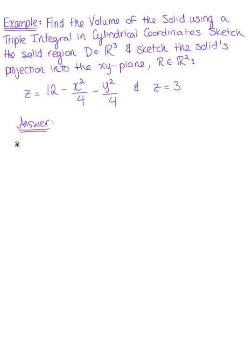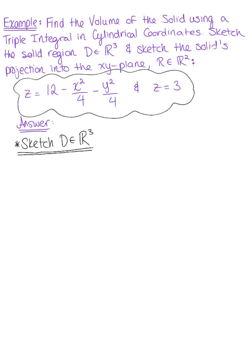The first thing we want to do is sketch the solid in three dimensions. The solid is bounded by these given curves, so let's begin by identifying them. The easier curve is z equals 3, which is a plane. We also have the curve z equals 12 minus x squared over 4 minus y squared over 4, which is a paraboloid.